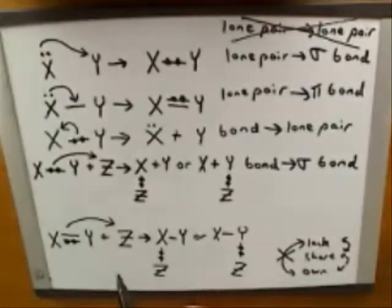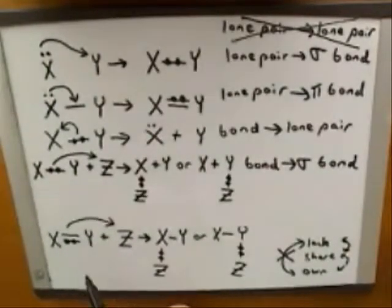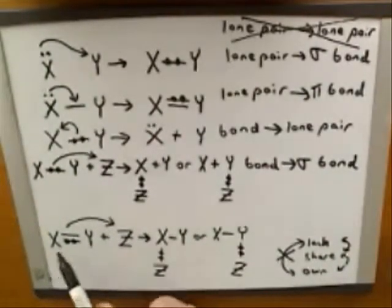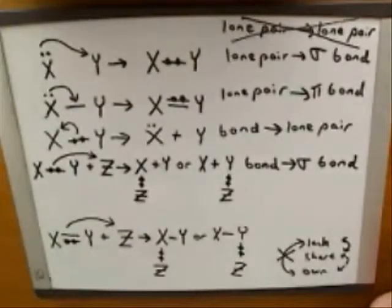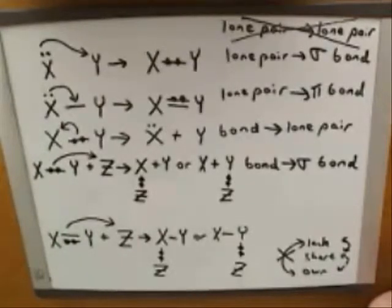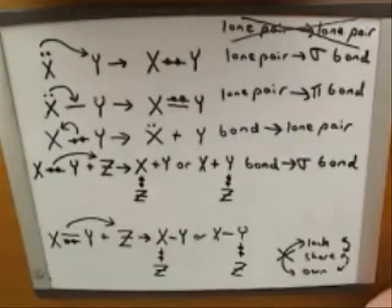The electron-pushing arrow here really is somewhat ambiguous, but we know that Z is forming a new bond — it has to be forming a bond with one of the atoms that was originally sharing the pair of electrons, either X or Y. I'll remind you again that we're not considering issues of charges in this introductory portion. In real life you would have to adjust the charges, but we're just talking about where the bonds and lone pairs are.